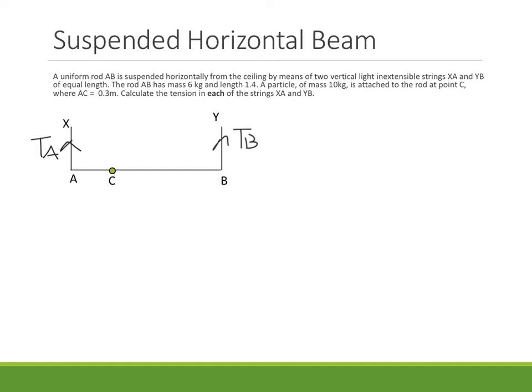Looking then at the rest of what we've got here, we've got a rod AB which has a mass of 6 kilograms and its length is 1.4. And we always, as it's a uniform rod, know that it's in the middle. So here is the 6 kilogram weight, which comes out to be 6G. And because it's in the middle, we know it's going to be 0.7 meters from the end.